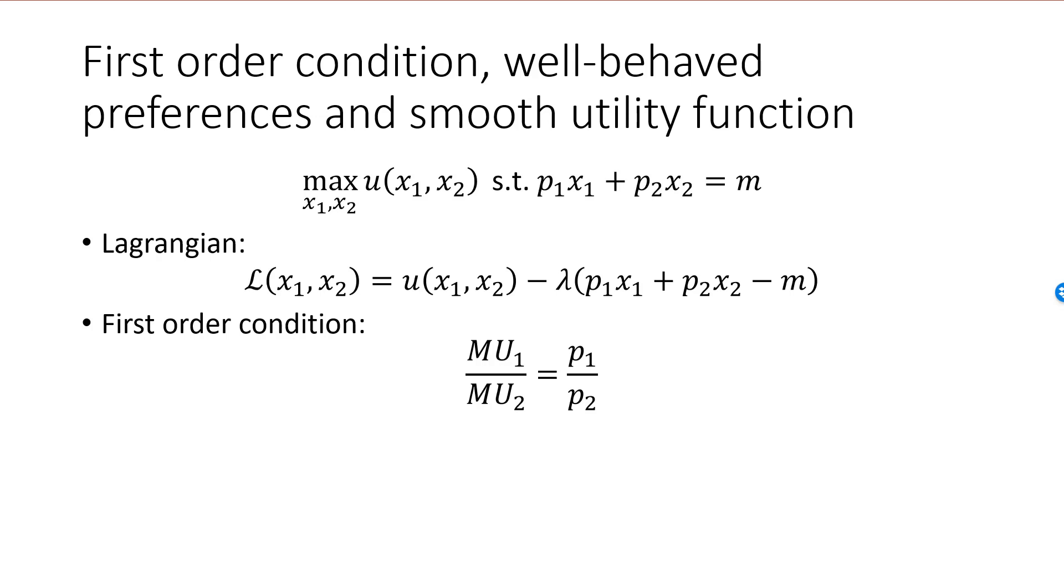If preferences are well-behaved, then there will be at most one bundle on the budget line satisfying the first order condition, and this bundle will be the optimal bundle.